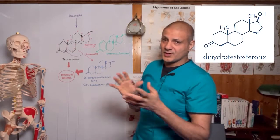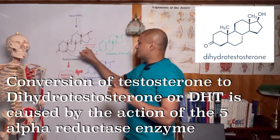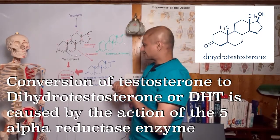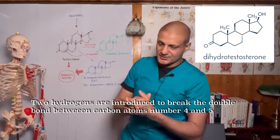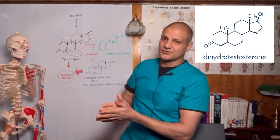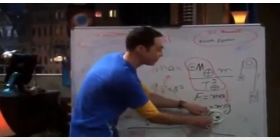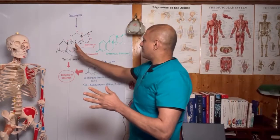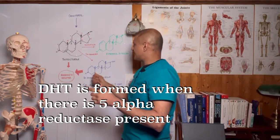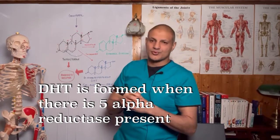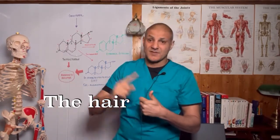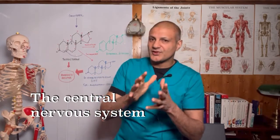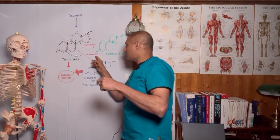Now let's look at the conversion of testosterone to dihydrotestosterone. When testosterone is acted on by the enzyme 5-alpha reductase, it breaks open the double bond between carbon atom number four and number five, and it adds two hydrogens — hence the name dihydrotestosterone. We get this formation of DHT where there is 5-alpha reductase present. You get a lot of this enzyme in certain areas of the body and tissue types: the skin, the hair, the prostate, the liver, and also the central nervous system. That's quite important when we come to talk about the drugs that block this 5-alpha reductase.